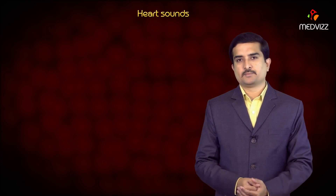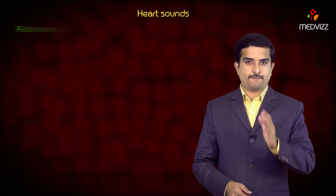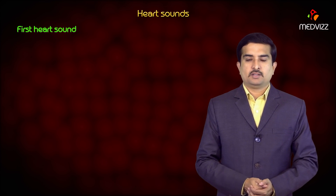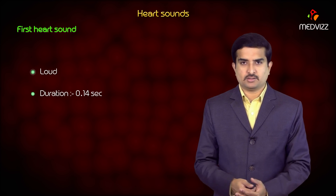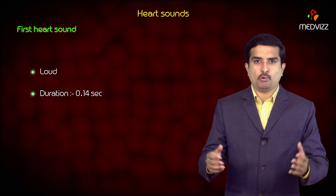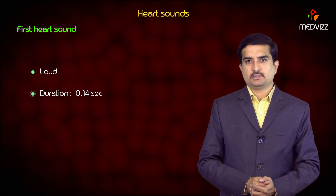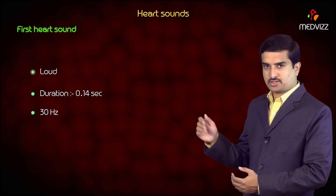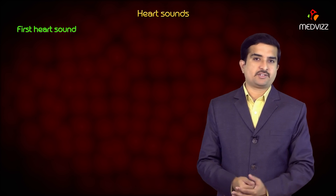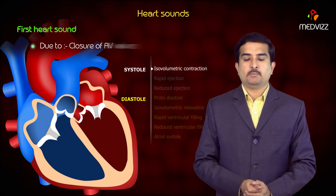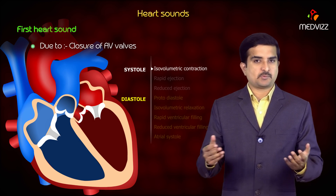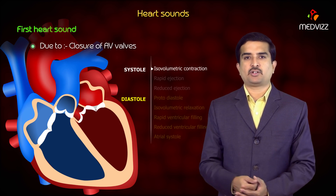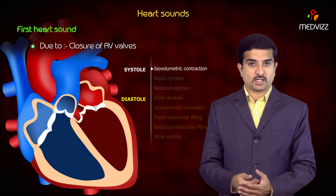Now let us discuss about heart sounds. The first heart sound is loud and the duration is approximately 0.14 seconds and it is 30 Hz. This first heart sound is mainly seen because of closure of atrioventricular valves, especially during the isovolumetric contraction period of the cardiac cycle.